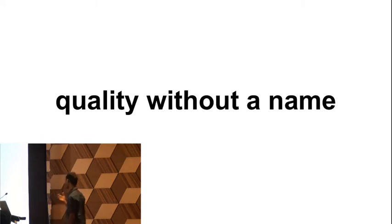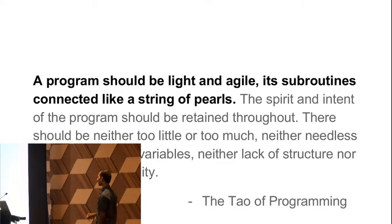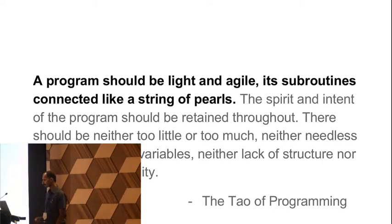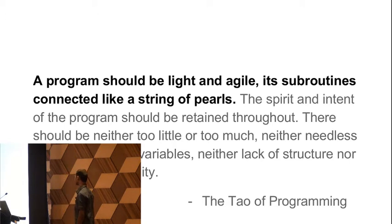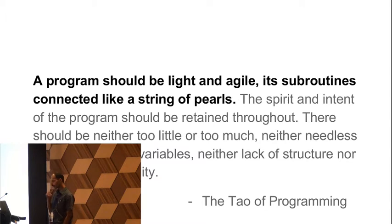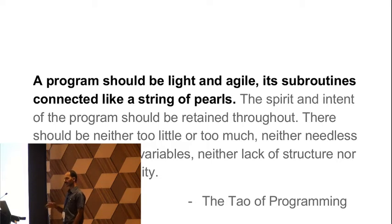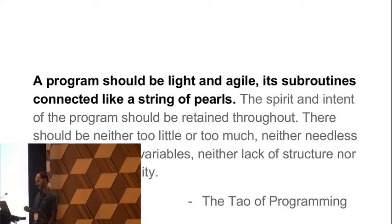The best I could do is take a quote from the Tao of programming: a program should be light and agile, its sub-routines connected like a string of pearls. The spirit and intent of the program should be retained throughout. There should be neither too little nor too much — neither unneeded loops nor unused variables. There should be neither a lack of structure nor overwhelming rigidity. When you look at a program, you have to have a kind of balance — it shouldn't be too unstructured or too rigid, it should have the right size, and it should convey the intent of the program.